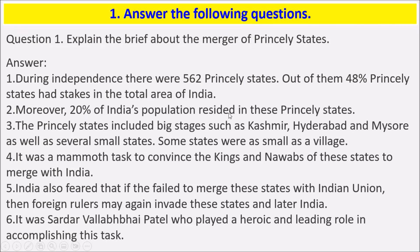Moreover, 20% of India's population resided in these princely states. The princely states included big states such as Kashmir, Hyderabad and Mysore, as well as several small states. Some states were as small as a village. It was a mammoth task to convince the kings and nawabs of these states to merge with India. India also feared that if they failed to merge these states with the Indian Union, foreign rulers may again invade these states and later India.